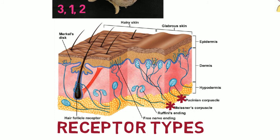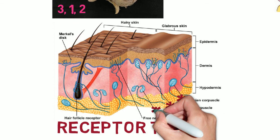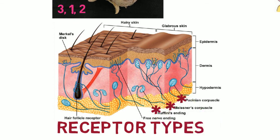Pacinian corpuscles can detect vibration and surface texture and have a role in proprioception. Ruffini corpuscles respond to sustained pressure and skin stretch, and are slowly adapting with a sustained response. Ruffini corpuscles can monitor slippage of objects along the surface of the skin and also have a role in proprioception.